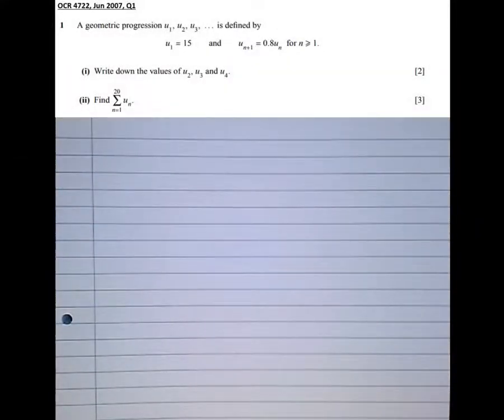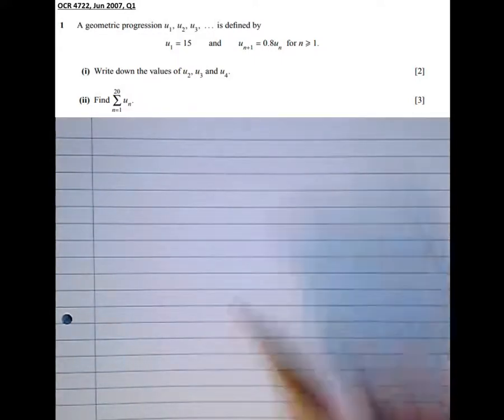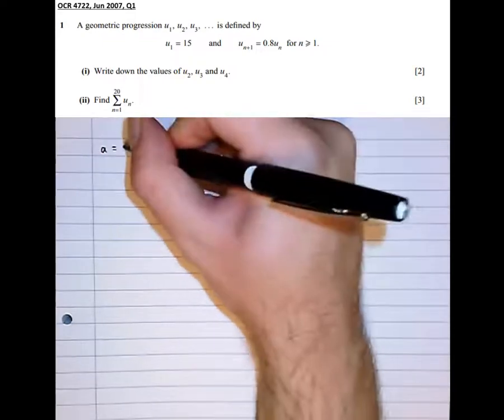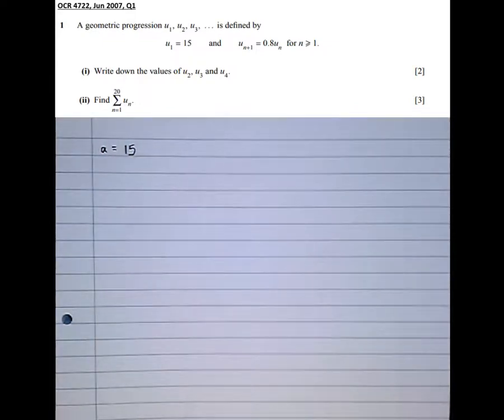So this question here says a geometric progression u1, u2, u3 is defined by u1, the first term, equals 15. And at this point I'll stop, because it's really good practice to write this down in sequence notation. The first term, a, is 15. That might be useful later.